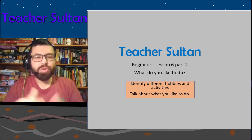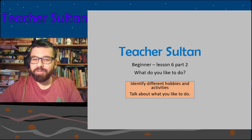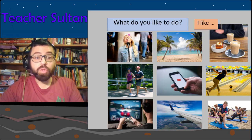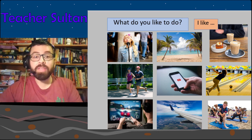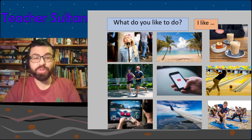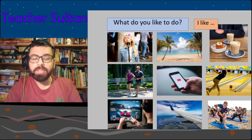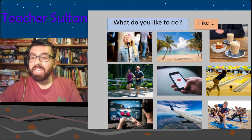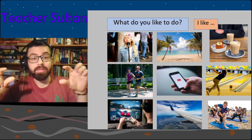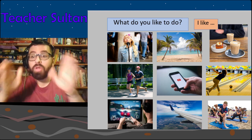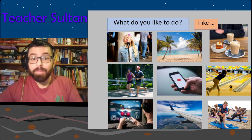Let's go ahead with our lesson. Last time you learned lots about different hobbies and activities — things that you like to do. We've been talking about 'What do you like to do?' At the end of the last lesson I asked a question — I had lots of hobbies shown in pictures and you had to make a sentence.